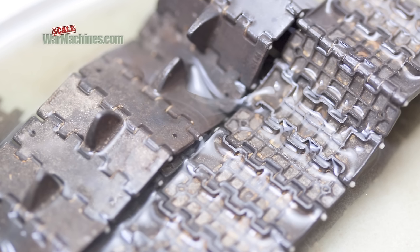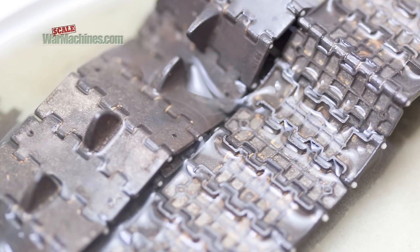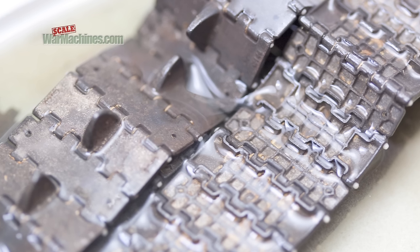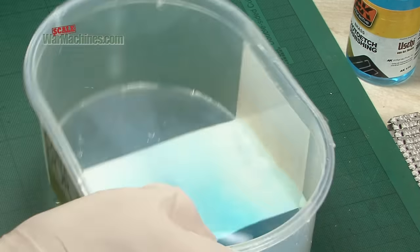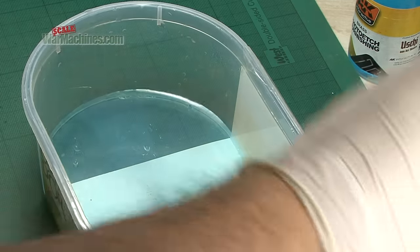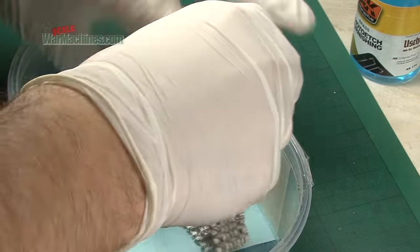As you can see, the resin Master Club track pins are unaffected, and the tracks remain completely workable. We'll repeat the technique on these Frawl Model KV2 tracks in exactly the same way using the remaining liquid.